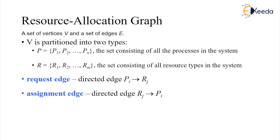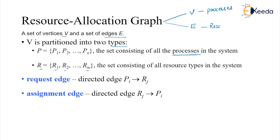A resource allocation graph consists of a set of vertices V and a set of edges E. Vertices V is partitioned into two types. P = {P1, P2, ..., Pn} is the set of all processes in the system — that is one type. The second type is R = {R1, R2, ..., Rm}, which consists of resource types.